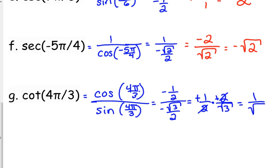So this is 1 over the square root of 3. Or rationalized, it is the square root of 3 over 3.